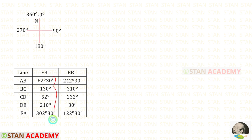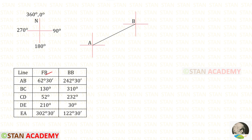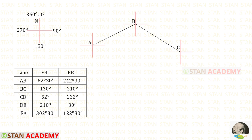Using the fore bearings, we can draw the traverse. Here the whole circle bearings are given. In the compass, north is 0 degrees, east is 90 degrees, south is 180 degrees, west is 270 degrees, and north again is 360 degrees. Let us make the direction symbol and keep this station as A. The fore bearing of AB is 62 degrees 30 minutes, which comes between 0 and 90, so we draw the line in that direction. The fore bearing of BC is 130 degrees, which comes between 90 and 180, so we draw the line accordingly.